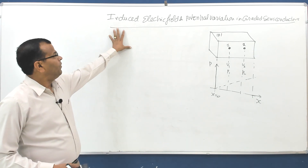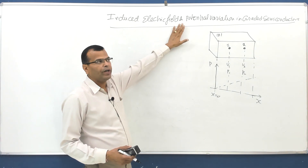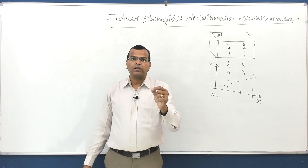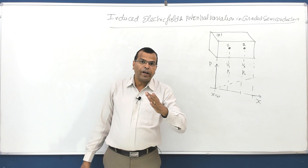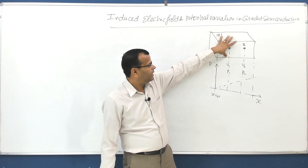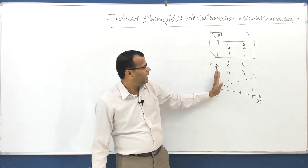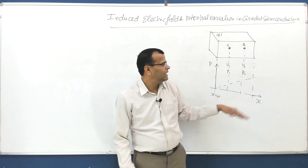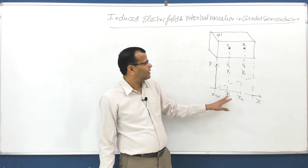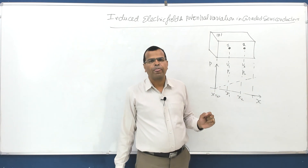Hello friends, we will now discuss an important and interesting topic of semiconductors: induced electric field and potential variation in graded semiconductors. Graded semiconductors are those in which the concentration is varying across the length of the semiconductor. I am assuming a p-type semiconductor bar where concentration is increasing continuously in one direction. At x equal to x1 the concentration is p1, and at x equal to x2 the concentration is p2.